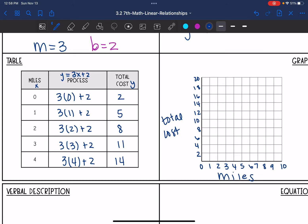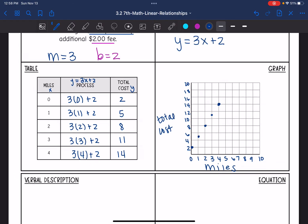Now I'm going to plot these ordered pairs, so 0 miles is $2, 1 mile is $5, which is halfway between 4 and 6. 2 miles would be $8, 3 miles would be $11, and 4 miles is $14. Okay, let's look at this next one.